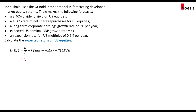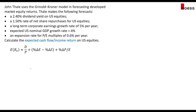Calculate the expected return on U.S. equities. Based on the model, the dividend yield is 2.4%, then we add the expected corporate earnings growth rate of 5% per year, then we minus the net share repurchase, which is negative 1.5%, and then we add the expansion of the PE multiple of 0.6% per year. Adding this up, we get an expected return of 9.5% for U.S. equities.